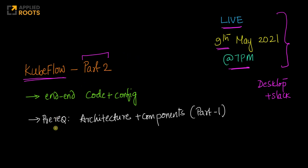So in the previous discussion, which was part one, we understood the architecture of Kubeflow. We understood what Kubeflow can do, what it cannot do. We understood all of the important components of Kubeflow.